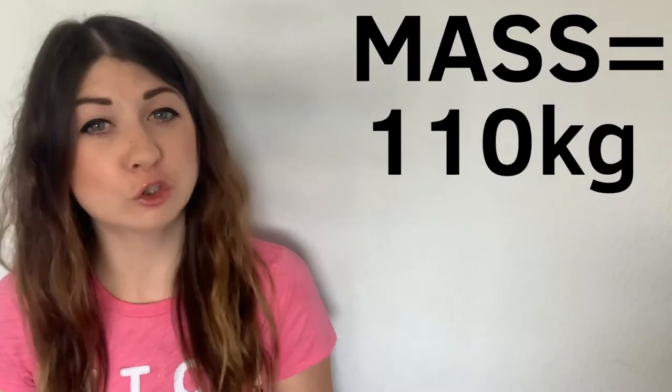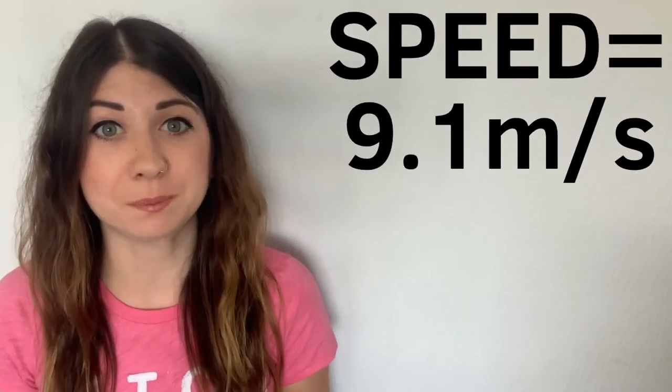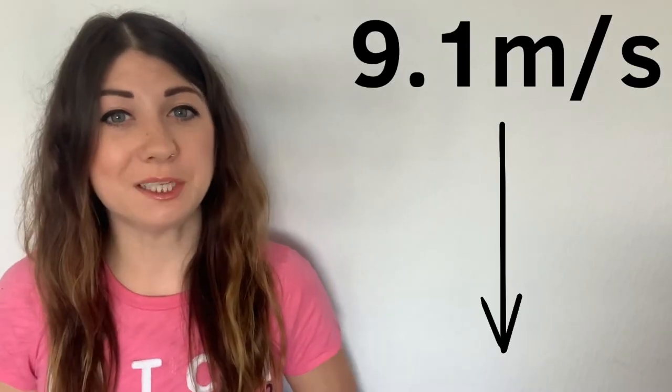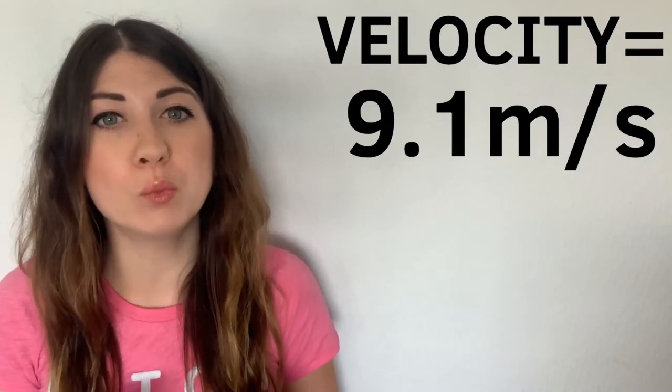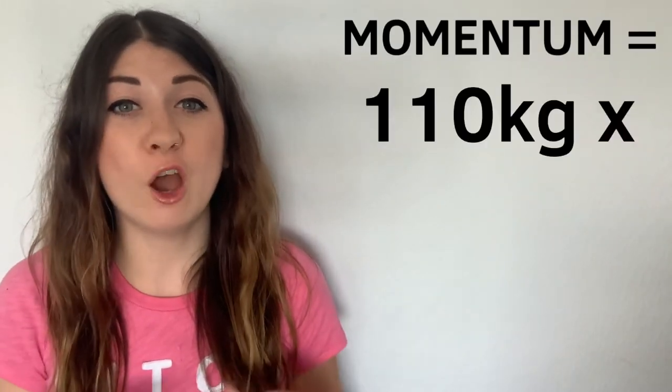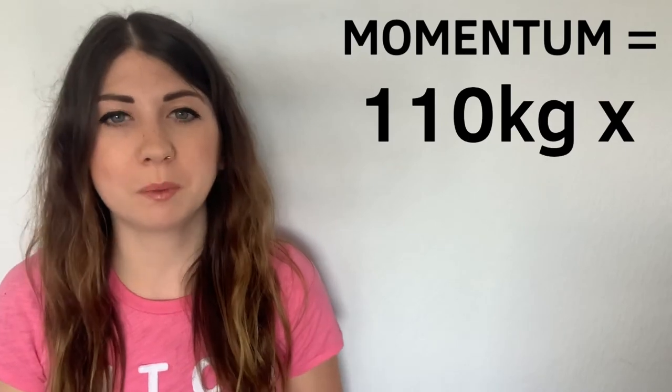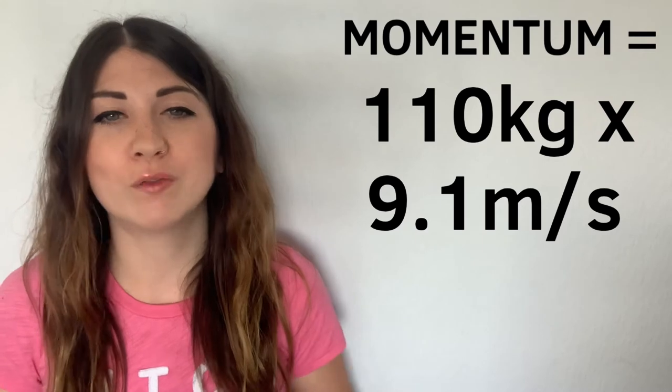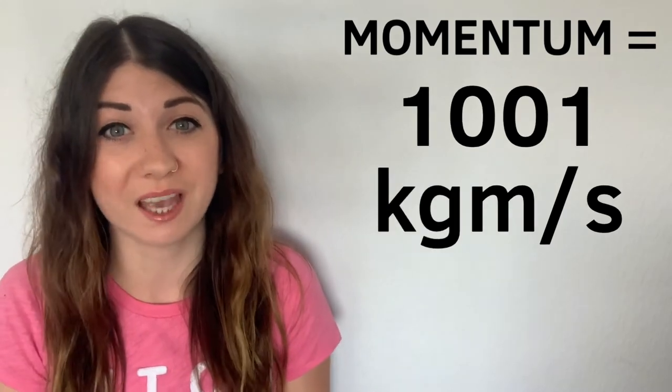Let's say a large rugby player had a mass of 110 kilograms and he could run at a speed of about 9.1 meters per second. When he's running at that speed in a straight line this means he'll have a velocity of 9.1 meters per second in that direction. So his momentum would be 110 kilograms multiplied by 9.1 meters per second giving a momentum of 1001 kilograms meters per second, which is quite large and I would not want to be on the opposition there.